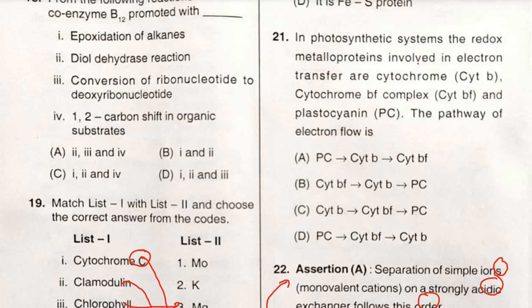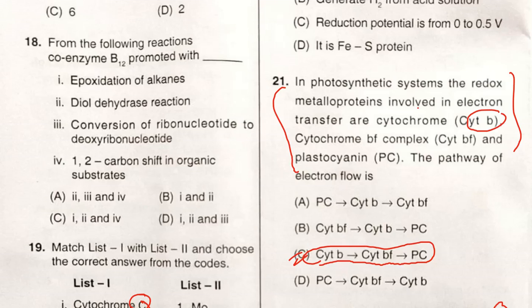In photosynthetic systems, the redox metalloproteins involved in electron transfer are: cytochrome c, cytochrome b. This is also a copy-paste question from CSIR previous year. The correct order is: cytochrome b, cytochrome bf, and plastocyanin. So option C is the correct answer. From the following reactions, coenzyme B₁₂ promoted - the correct promoted reactions are: diol dehydrase reaction, conversion of ribonucleotide to deoxyribonucleotide, and 1,2 carbon shift in organic substrates, but not the epoxidation of alkanes. It's epoxidation of alkenes that's involved, not alkanes. So 2, 3, and 4 are the correct ones.